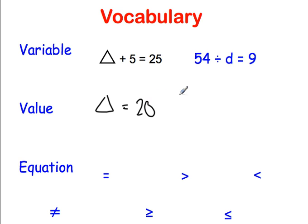The next problem over here, we've got 54 divided by d equals 9. Now d is our variable in this case, so 54 divided by what equals 9? Well, 54 divided by 6 equals 9, so d equals 6. So the variables in these two equations are the triangle and then the letter d.